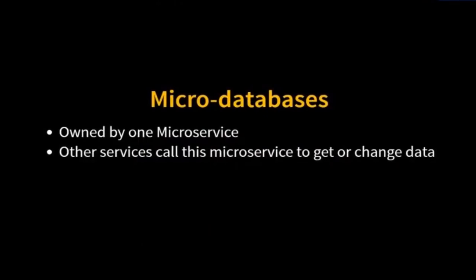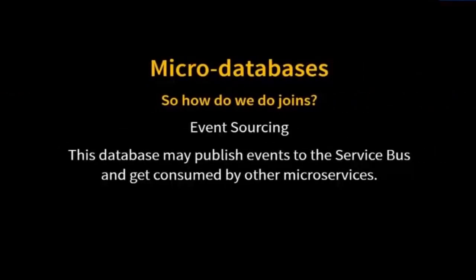A micro database is owned by one microservice. Other services call this microservice to get or change data. So now we may run into a few different problems. How do we do a join? Do I really need to call that other microservice for each record in the result set to get the additional data? Instead, let's create an event store. This event store stores all of the events that happen in our system. Our reporting service — the one that needs to do the joins — can listen to all these events that it cares about and create its denormalized view of data. So when it comes time to build that report, we don't need to join on a different micro database. We already have the data that we need.